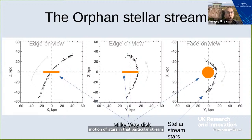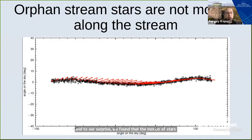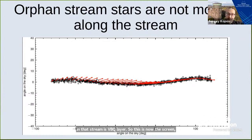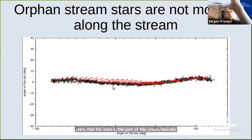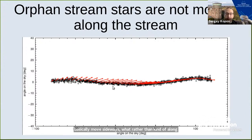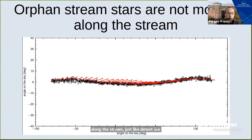To our surprise, we found that the motion of stars in that stream is very peculiar. This is the stream unwrapped, and it looks almost like a straight line. When we measure the velocities of stars, we notice that stars in this part of the stream move sideways rather than along the stream itself. For most streams, we would expect stars to move along the stream — just like a train moves along a railroad track. But here the stars are moving sideways, which really puzzled us.